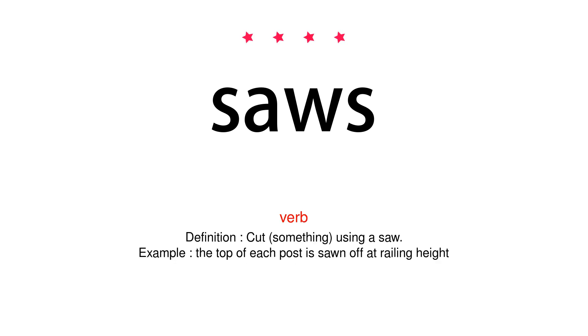Verb. Definition: Cut something using a saw. Example: The top of each post is sawn off at railing height.